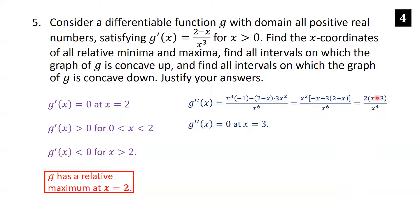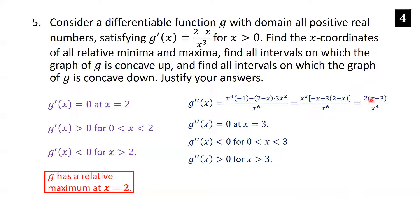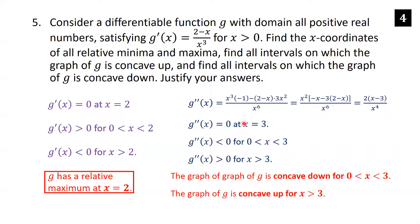Simplifying, g″(x) = 2(x−3)/x⁴. The second derivative is zero when x = 3. For 0 < x < 3, g″ is negative (test x=2: 2−3 = −1, denominator positive), so the graph is concave down. For x > 3, g″ is positive (test x=4: 4−3 = 1, all positive), so the graph is concave up for x > 3.